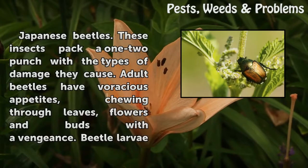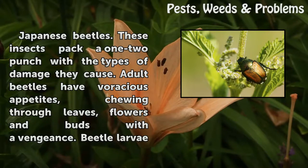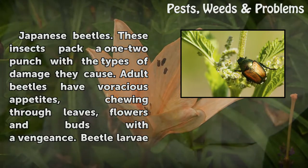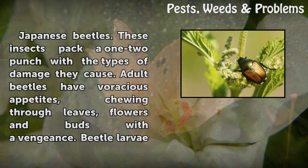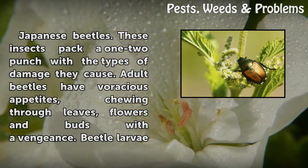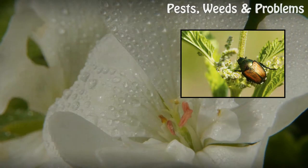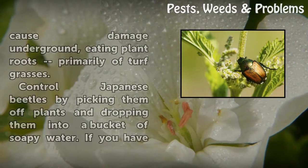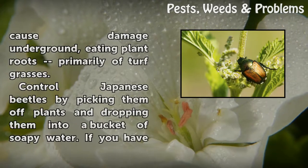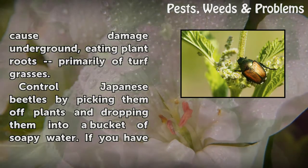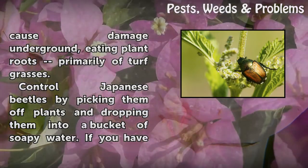Japanese beetles: these insects pack a one-two punch with the types of damage they cause. Adult beetles have voracious appetites, chewing through leaves, flowers, and buds with a vengeance. Beetle larvae cause damage underground, eating plant roots — primarily of turf grasses.